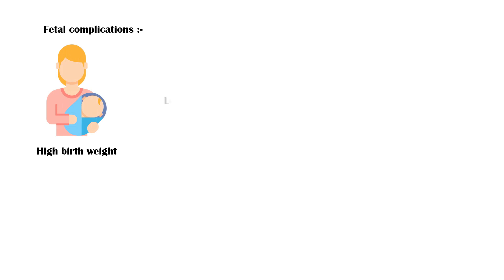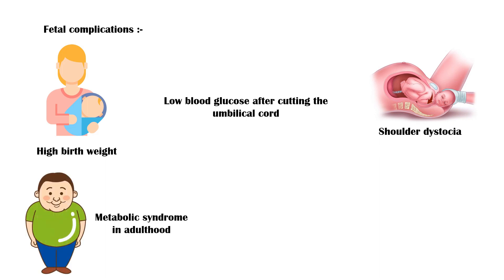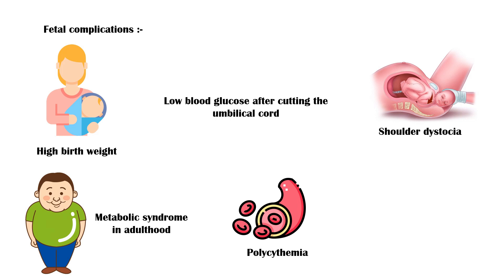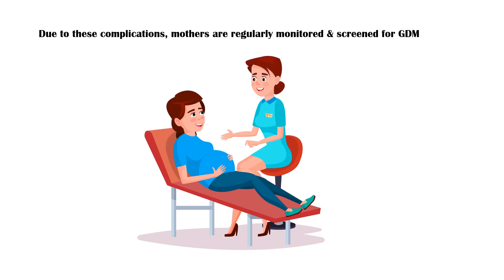Fetal complications include high birth weight, low blood glucose levels after cutting the umbilical cord, shoulder dystocia or nerve injury during delivery, metabolic syndrome in adulthood, polycythemia or increased red blood cells in blood — which increases the risk of thrombosis or formation of blood clots — and neonatal jaundice. Due to these complications, mothers are regularly monitored and screened for gestational diabetes.